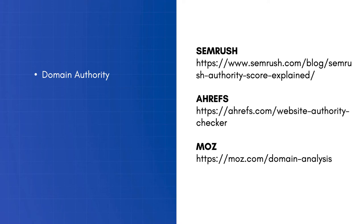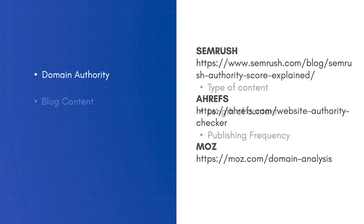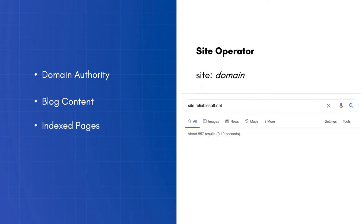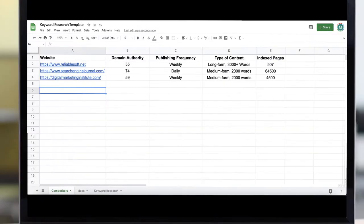You can use tools like SEMrush, Ahrefs, or Moz to find a website's domain score. The higher the score, the more authoritative a website is. Visit the website and examine their content. Take note of things like the type and length of content and their publishing frequency. Use the site operator to find out how many pages they have in Google's index. This will give you an indication of how big a website is. Keep this information in a notebook or spreadsheet — we'll use it later in the process.